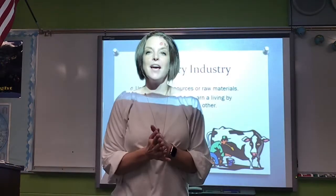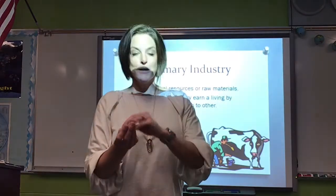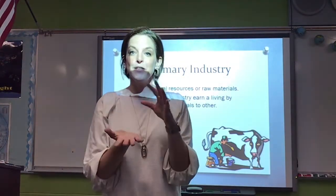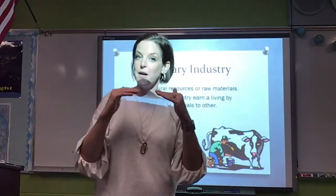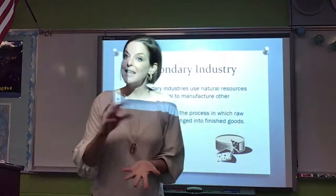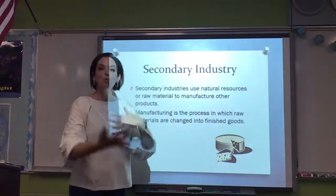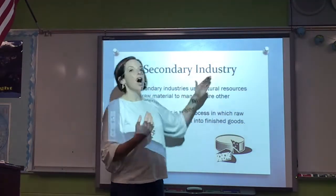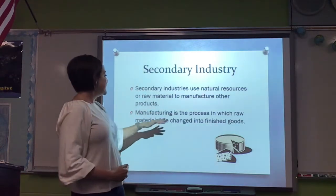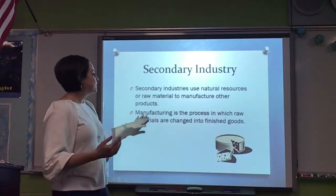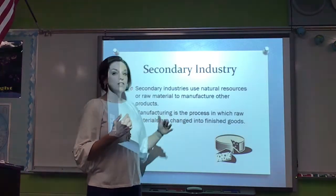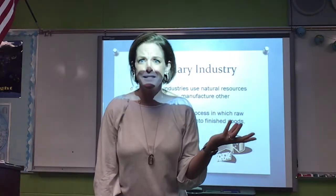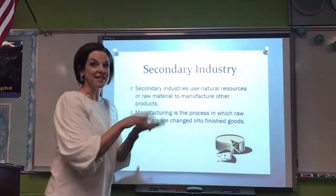Take cheese — cheese has milk in it, and milk comes from the cow. We live in a farming community and a lot of your parents and family members are farmers, so this is going to be our primary level. Next, I'm going to take the milk, mix it with other ingredients, and this is going to lead to our secondary industry. The secondary industry uses all these natural resources and raw materials to get a product. Manufacturing is the process in which raw materials are changed into a finished good — so at the second level, we make the cheese.